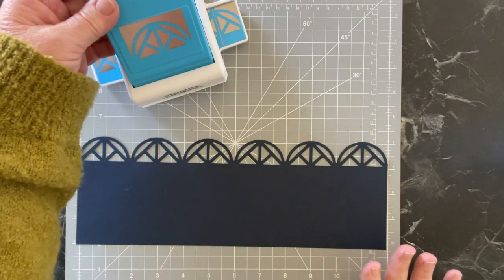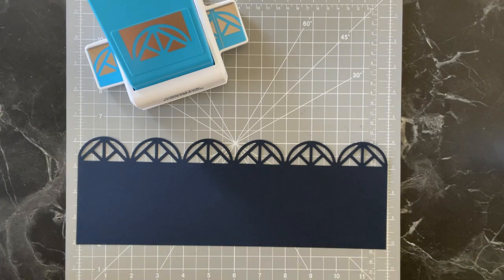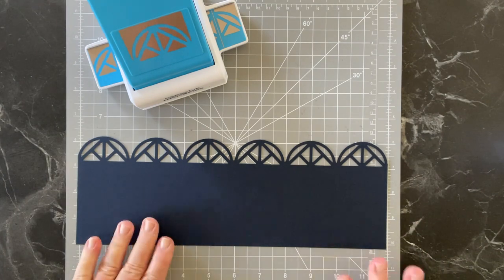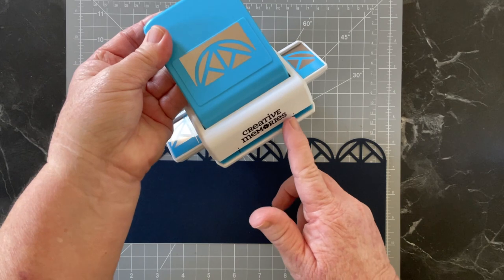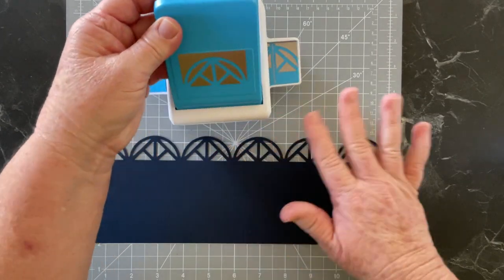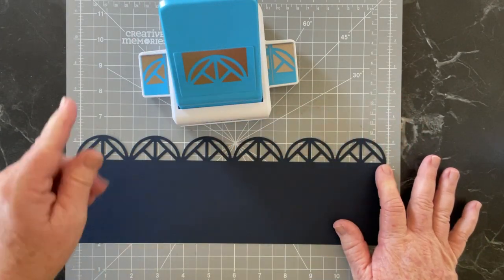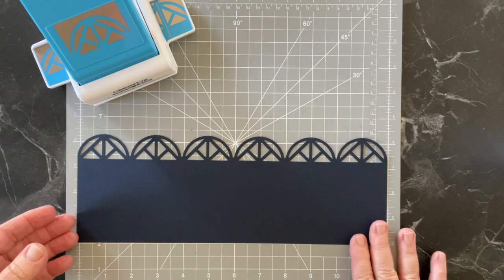To start off with, you need to punch out a straight line border. I've pre-done that and that's just lining it up in here and just punching from start to the end, just how we normally would make a border.